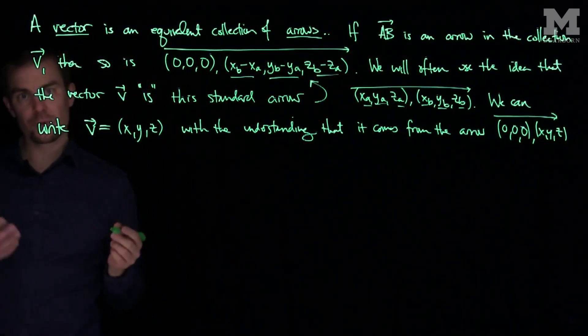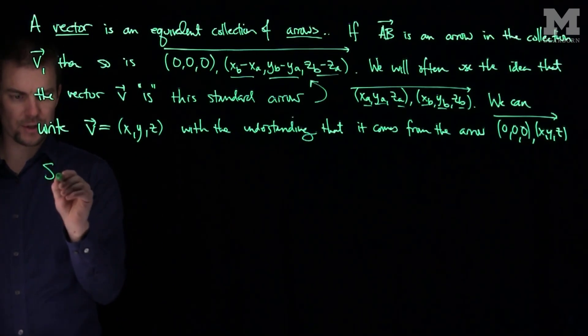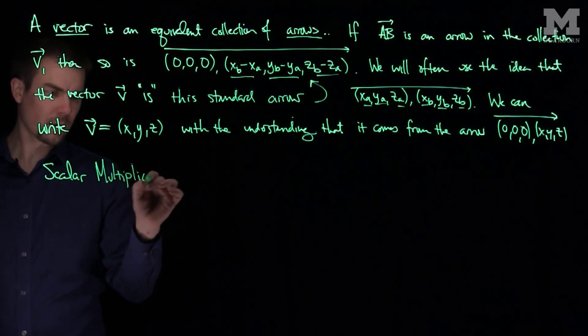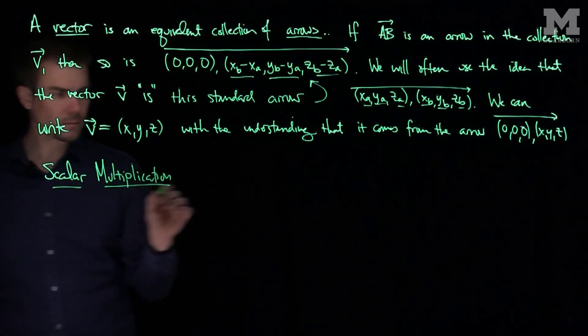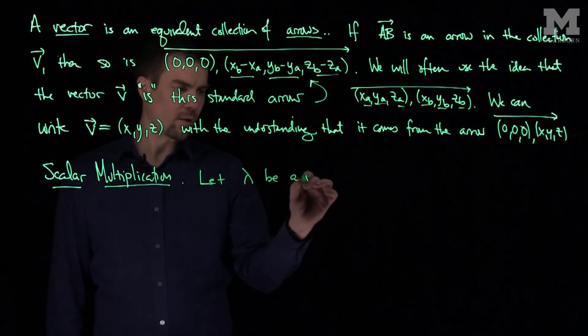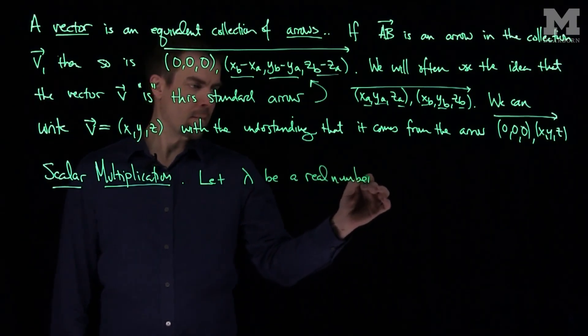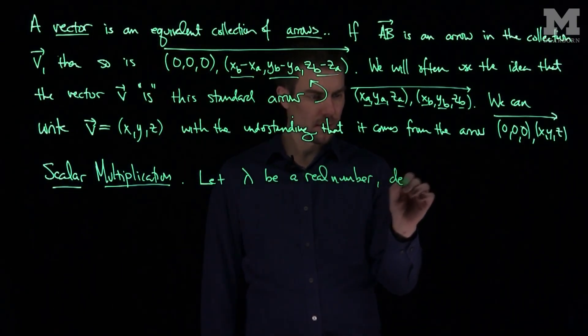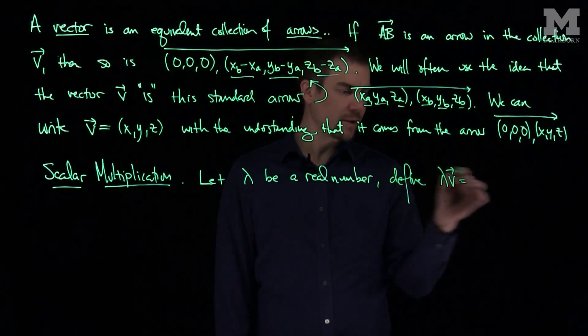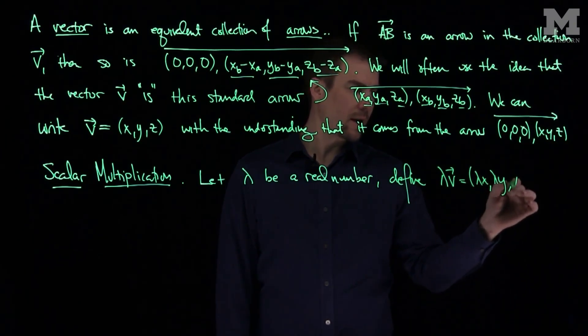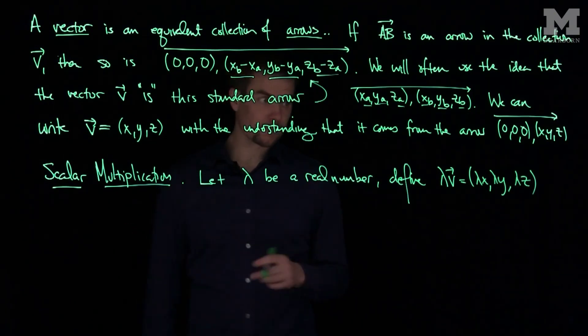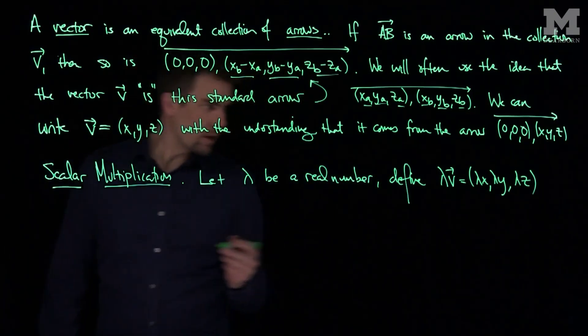With this in mind, we can define scalar multiplication. Let lambda be a real number. We can define lambda times a vector V as lambda X, lambda Y, lambda Z, where the starting point is still the origin.